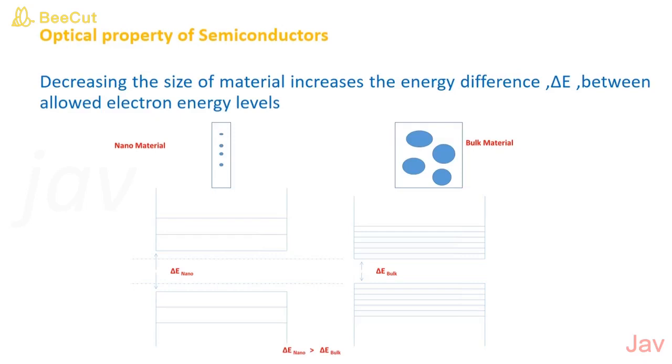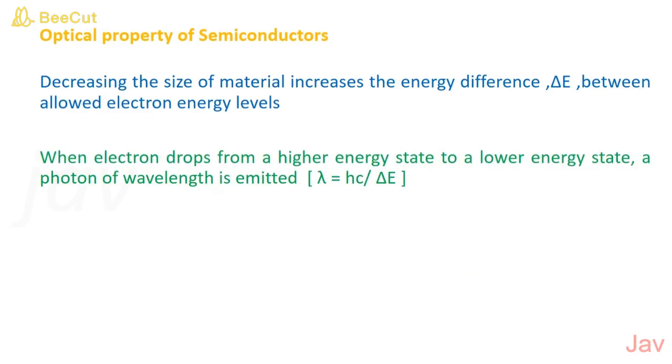According to quantum theory, when an electron jumps from a higher energy level to a lower energy level, a photon of wavelength is emitted. We can find the wavelength of the emitted photon using the relation lambda equals hc by delta E.